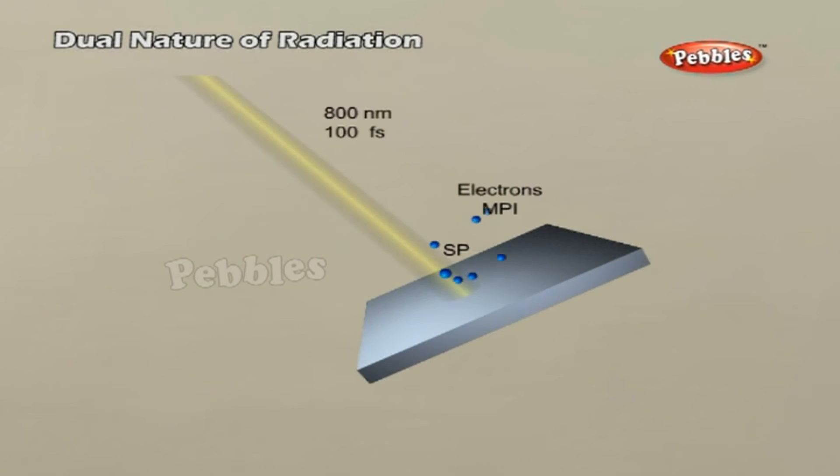Electron emission. Metals have free electrons that are responsible for their conductivity. However, the free electrons cannot normally escape out of the metal surface. If an electron attempts to come out of the metal, the metal surface acquires a positive charge and pulls the electron back to the metal. The free electron is thus held inside the metal surface by the attractive forces of the ions.